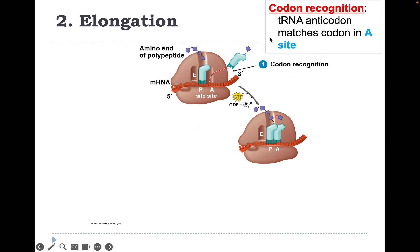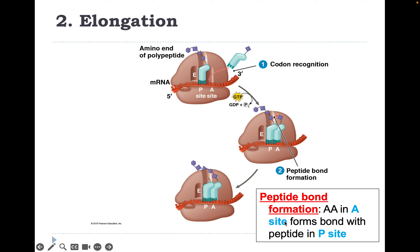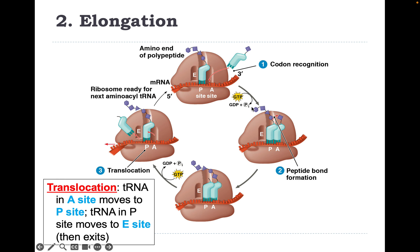Next comes elongation. Codon recognition occurs when the tRNA anticodon matches the codon in the A site — the correct tRNA binds complementary to the three-letter mRNA codon. Then a peptide bond forms: amino acids in the A site form bonds with the peptide in the P site, adding the next amino acid to the growing chain. Translocation follows: the tRNA in the A site moves to the P site, the tRNA in the P site moves to the E site, and then it exits.